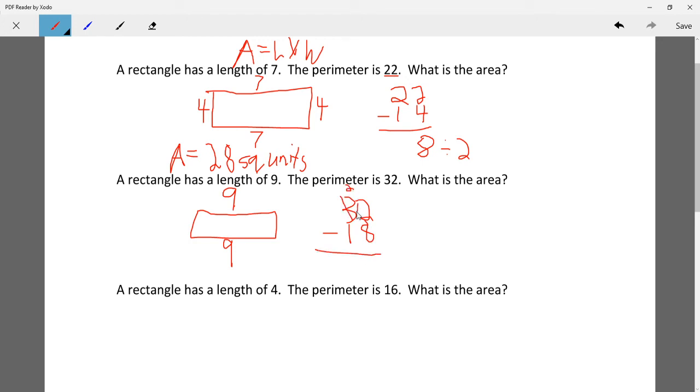So I have to borrow from the 2, 12 minus 8 is 4, 2 minus 1 is 1. So now we have 14, and we have to divide it by 2, because there are two sides, so 14 divided by 2 is 7. So this should add up to 32, 14 plus 18 does equal 32.